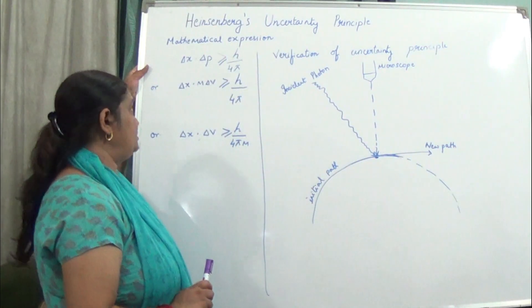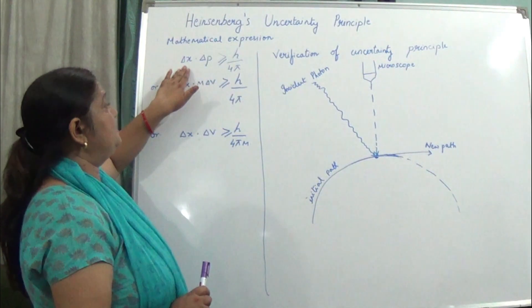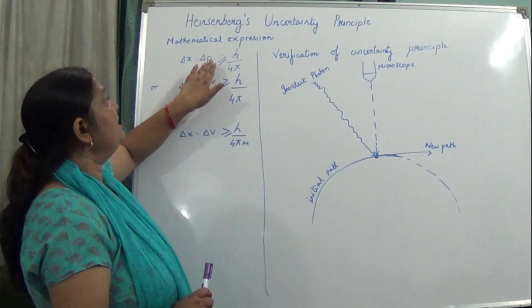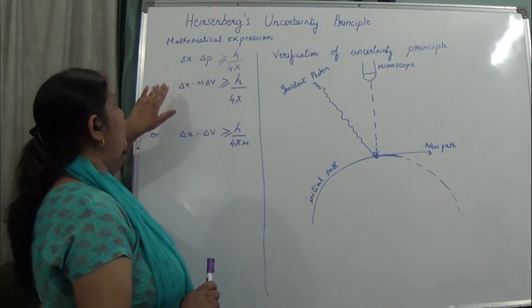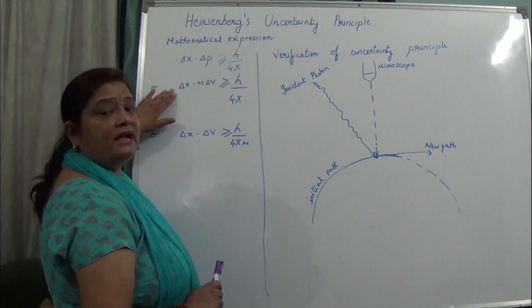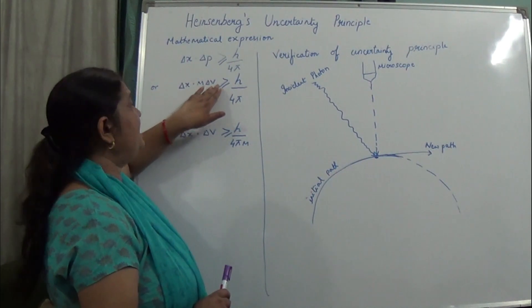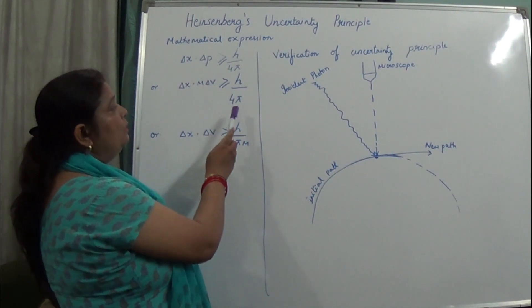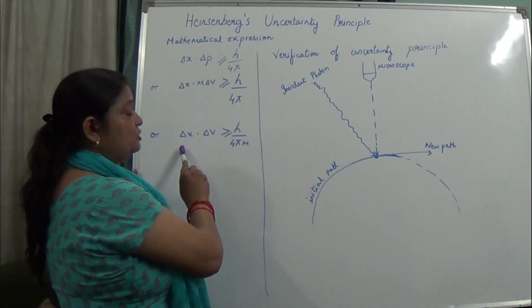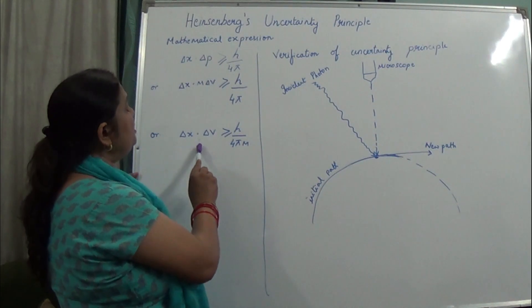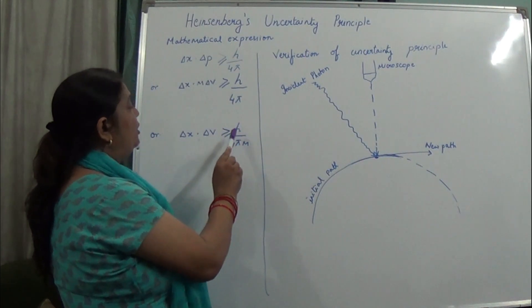He gave a mathematical expression for his theory. Change in position multiplied by change in momentum is greater than or equal to h upon 4π. It can also be written as change in position into mass times change in velocity is greater than or equal to h upon 4π. Likewise, change in position into change in velocity is greater than or equal to h upon 4πm.